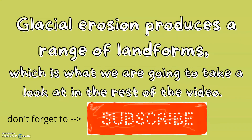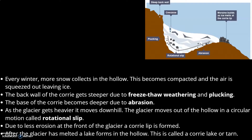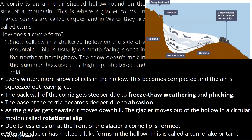Glacial erosion produces a range of landforms, which we are going to look at in the rest of this video. A corrie is an armchair-shaped hollow found on the sides of a mountain — this is where a glacier forms. In France, corries are called cirques and in Wales they are called cwms.